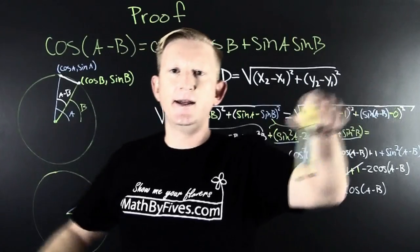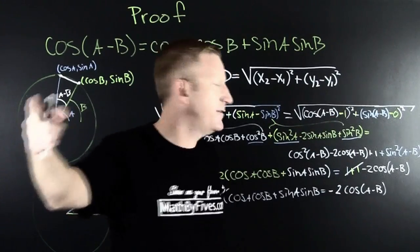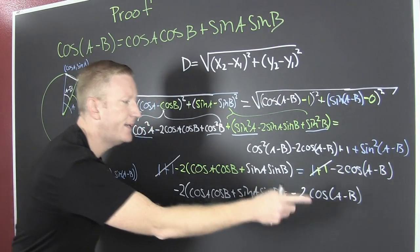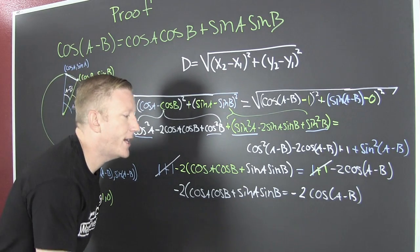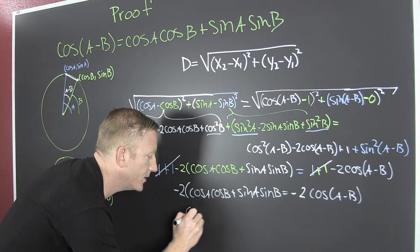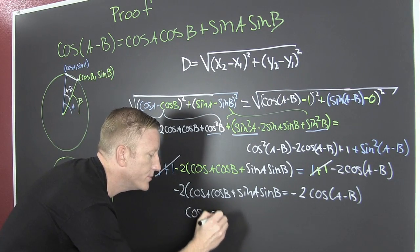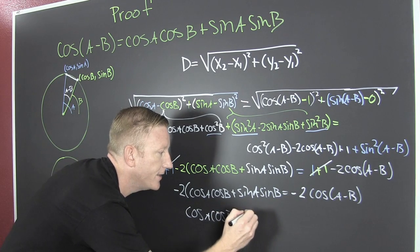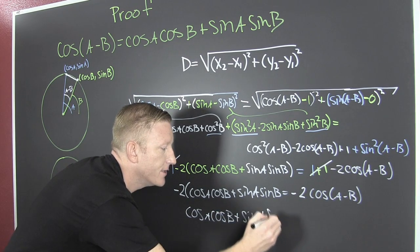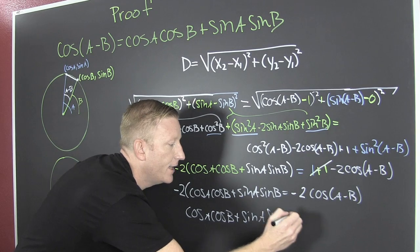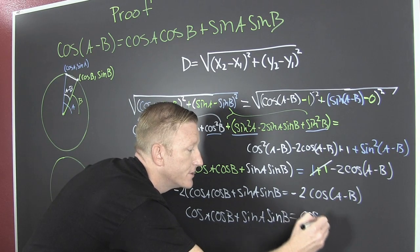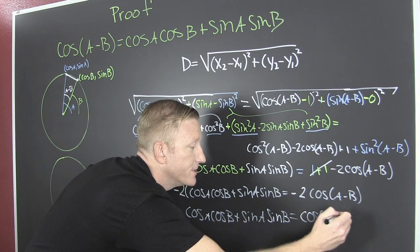Now stay with me. The only thing I have left to do is divide both sides by that minus two. And when I do, I'm going to get that the cosine of A cosine of B plus the sine of A the sine of B, that's going to be the cosine of A minus B.